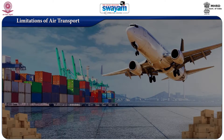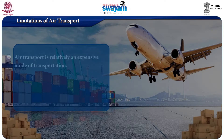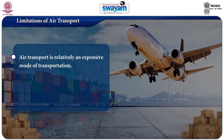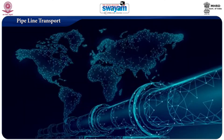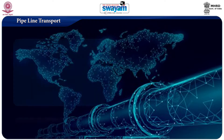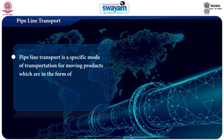Limitations of air transport: air transport is a relatively expensive mode of transportation. It is not suitable for transporting heavy and bulky goods, nor for short-distance travel. Pipeline transport: pipeline transport is a specific mode of transportation for moving products which are in the form of gas, liquid, or slurry.